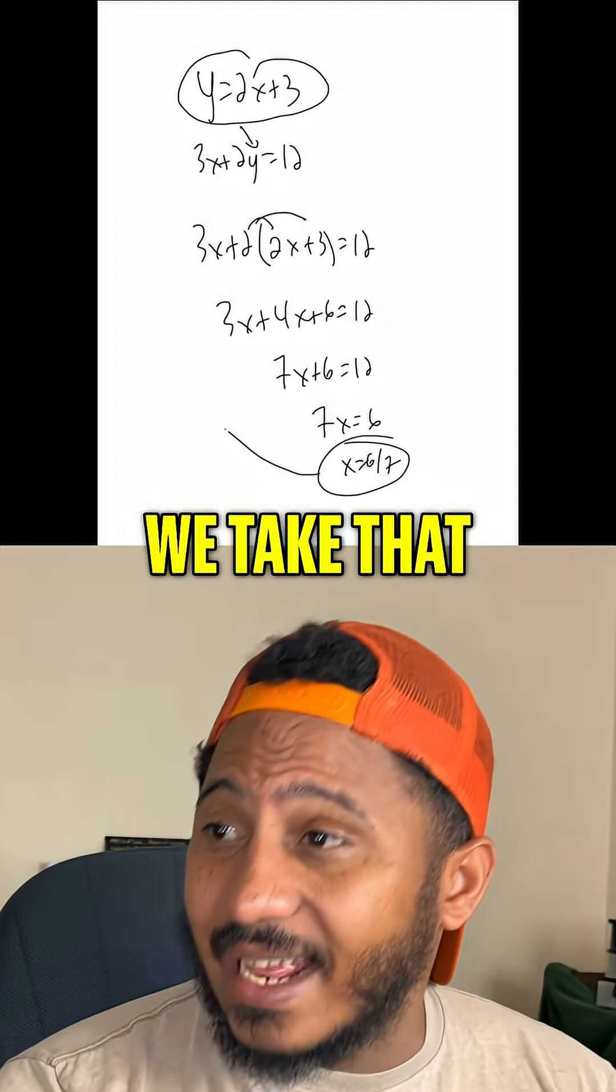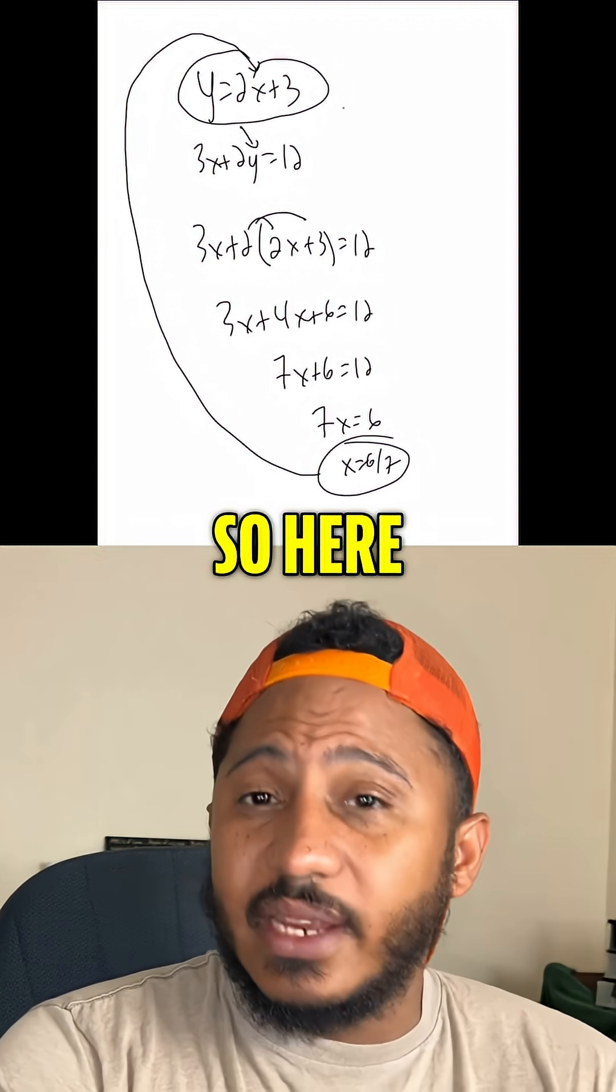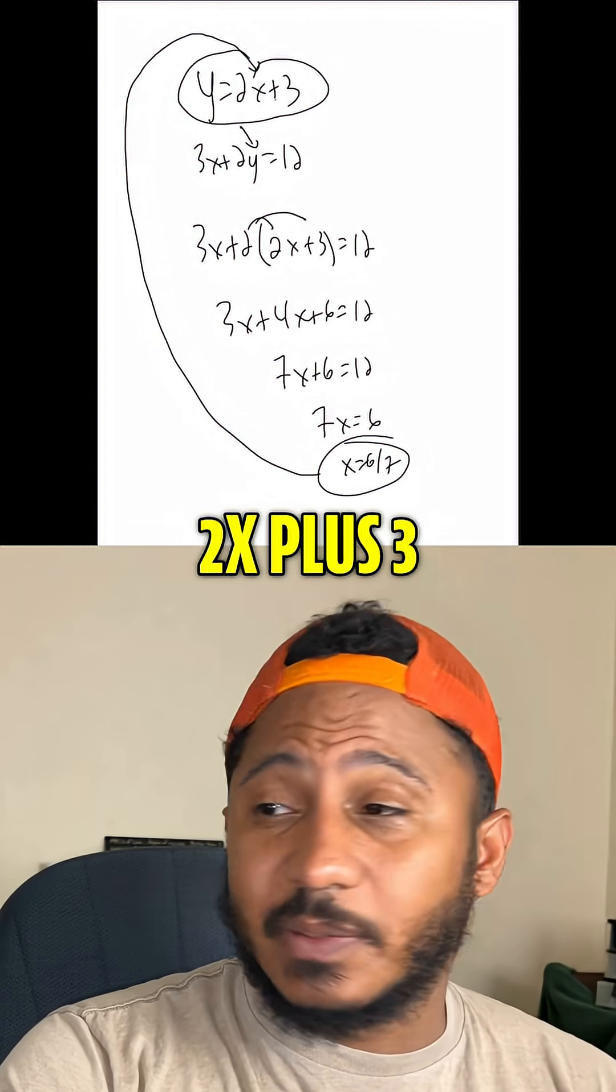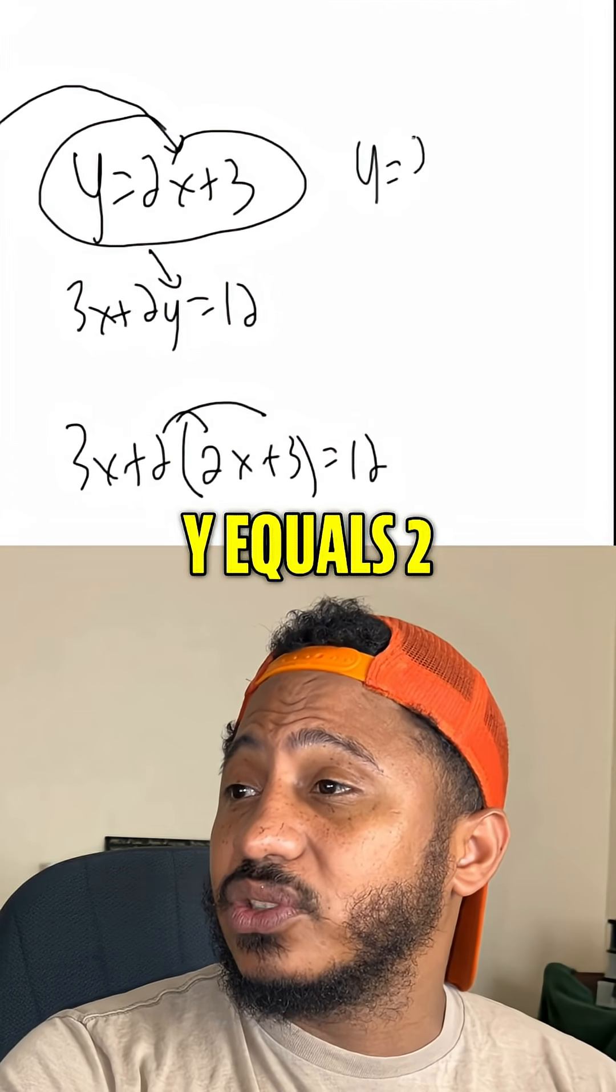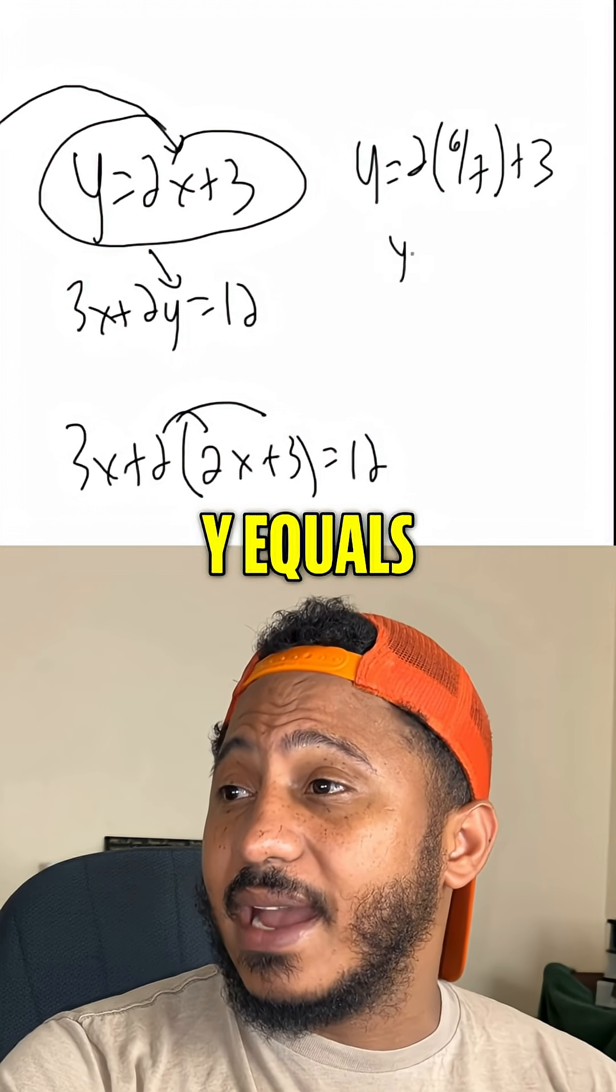To find the y coordinate, we take that x and plug it back in to one of the other equations. So here, we can plug it back into y equals 2x plus 3. That would give us y equals 2 times the 6 sevenths plus 3.